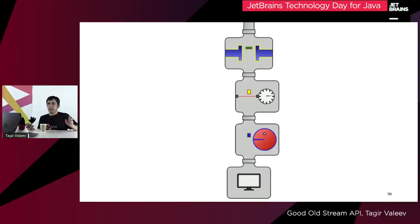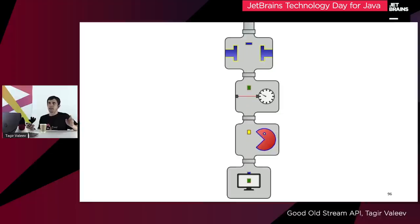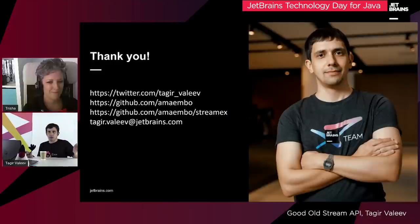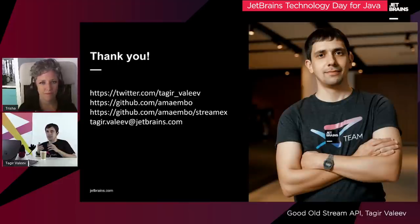That's all for today. We discussed a number of ways to modify existing stream operations or create your own. Please use standard API when it makes your code more readable, and avoid Stream API in cases where it's not suitable. Thank you.